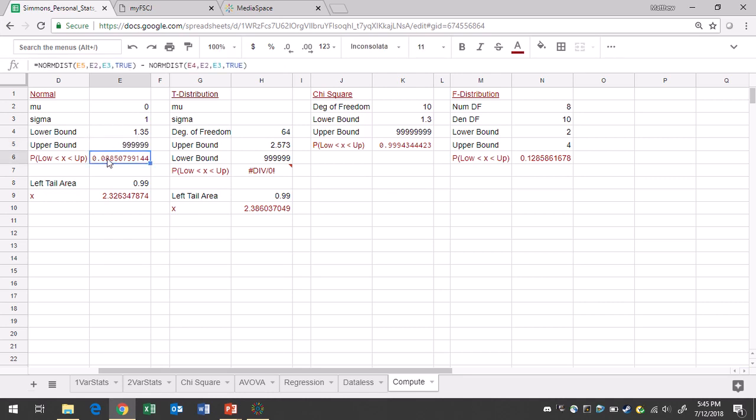Now, we'll look at your answer in cell E6. Round it to four decimal places. You get 0.0885. That is your p-value, 0.0885.